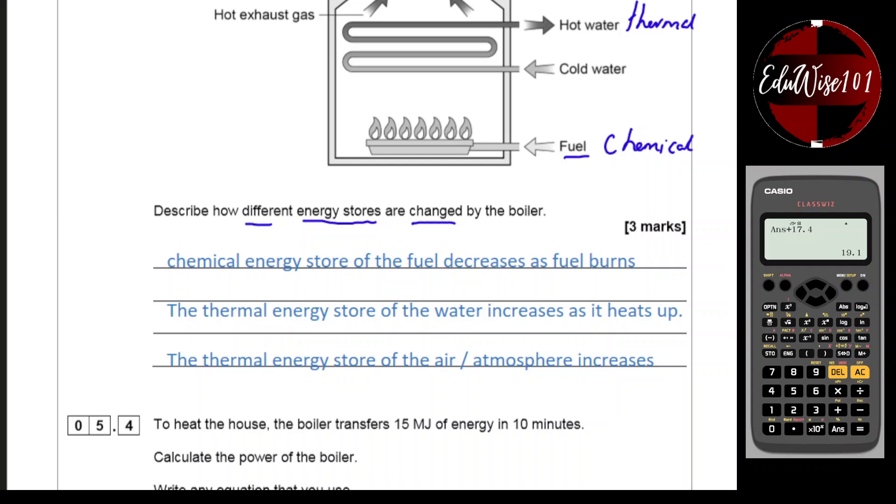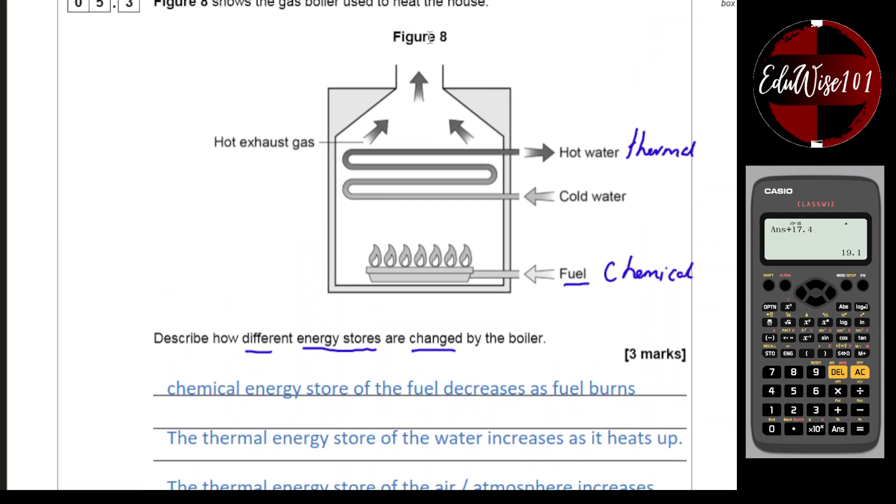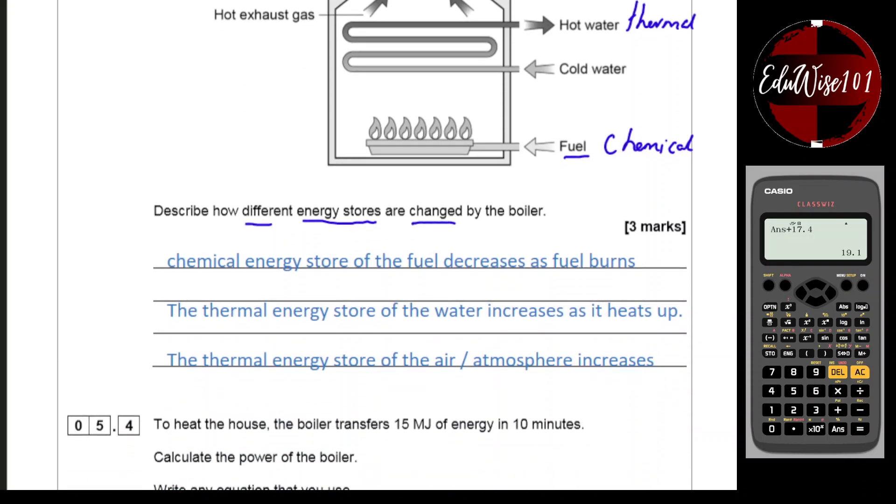So chemical energy store of the fuel decreases as the fuel burns. The thermal energy store of the water increases as it heats up. That would be just two marks here for those two points. To get the third mark, you need to also say the energy store or the thermal energy store of the air or the atmosphere also increases. So it's not just the hot water gaining energy, the air around it because it's a hot exhaust gas is escaping out. So the third mark is to say the thermal energy store of the air or the atmosphere increases.